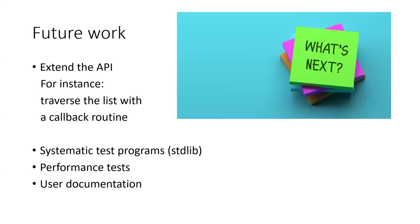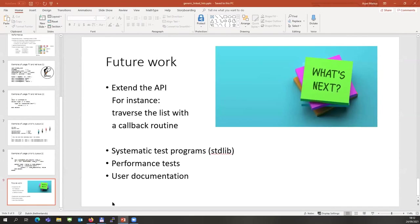Future work: we intend to extend the API. One thing that would be nice is traversing the list without a callback routine, so you don't have to program it yourself and can use the structure of the linked list quite efficiently. We've opened the PR for including this in the stdlib. For that, we still have to do some systematic test programs, add nice performance tests, and of course, user documentation — whereas now we have mainly developer documentation. That concludes the presentation about Chetan's work. It was actually his first exposure to Fortran, so we're quite happy that he was able to do all of this.